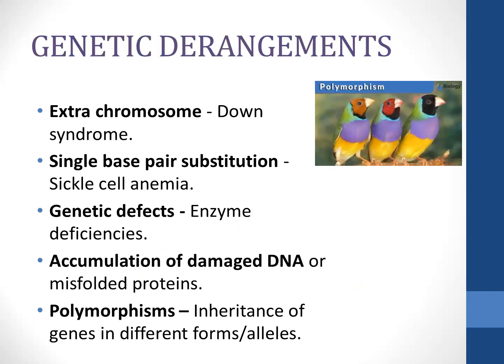Genetic derangements or mutations can also lead to cell injury. These include extra chromosomes, single base pair substitution, genetic defects leading to enzyme deficiencies, accumulation of damaged DNA or misfolded proteins, and polymorphisms, which include genetic variation of different alleles.